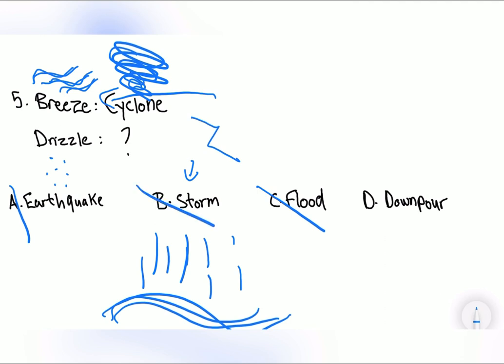So we can cancel that out and infer that D is the answer. Why is D the answer? Because it comes from the sky, first of all. That's our first rule, coming from the sky. Second of all, it's the more intense version of a drizzle. So, leading us for D to be the answer.